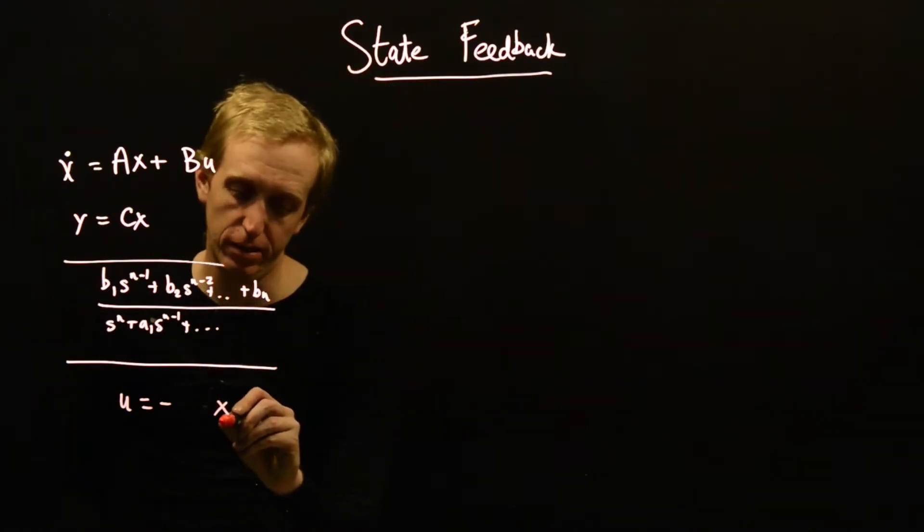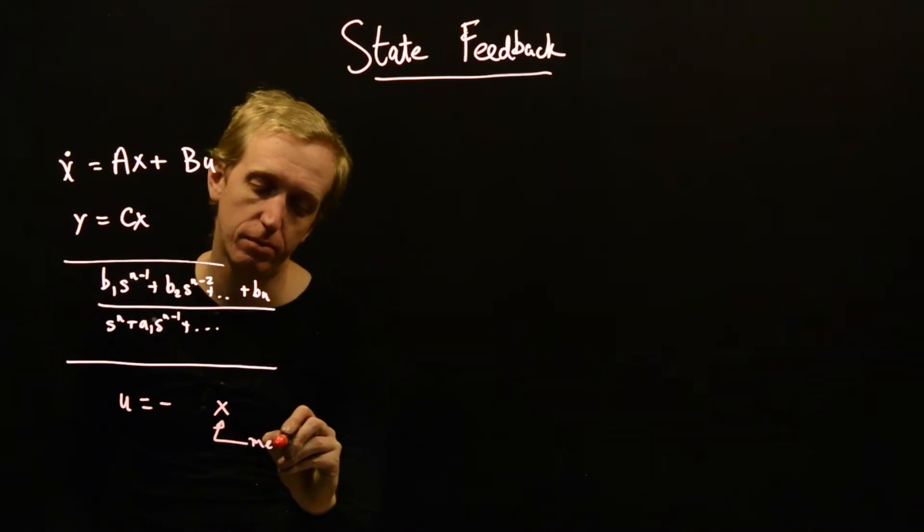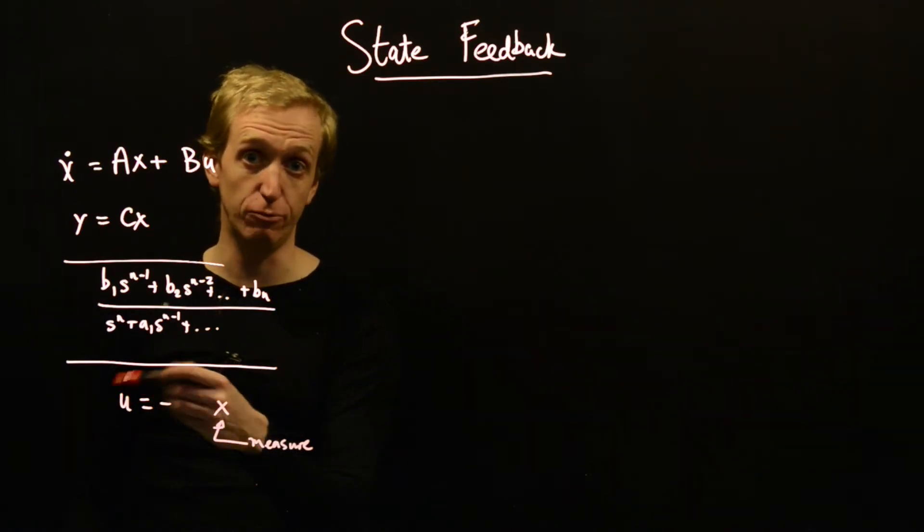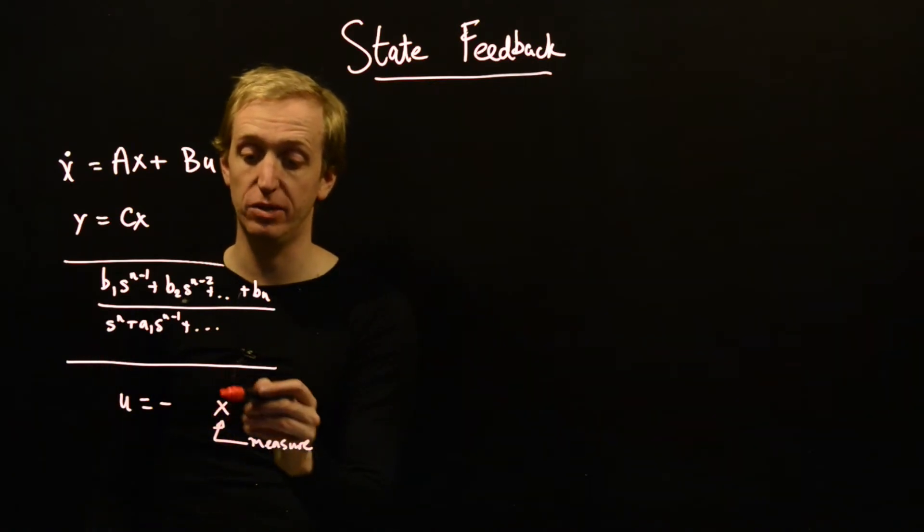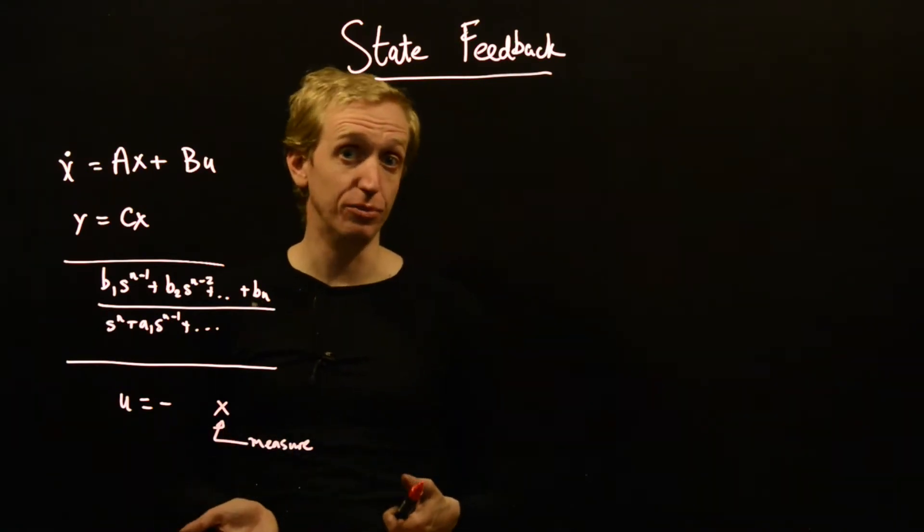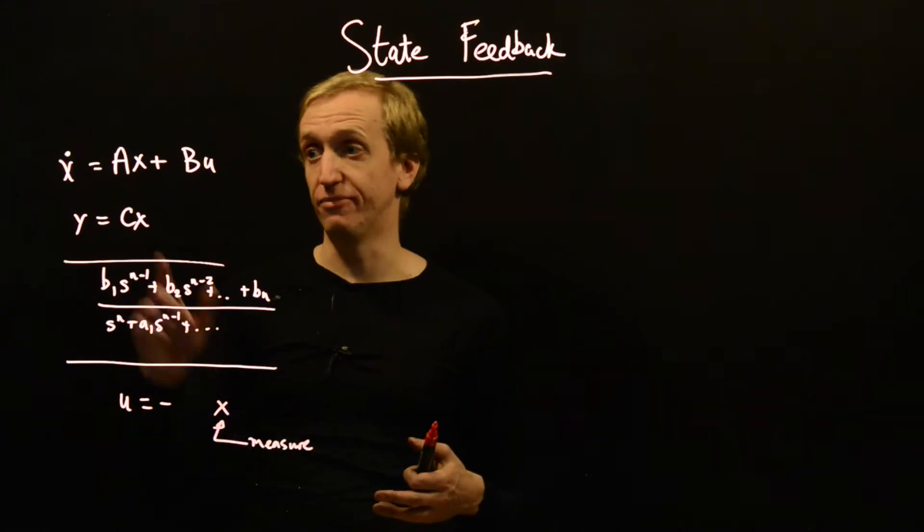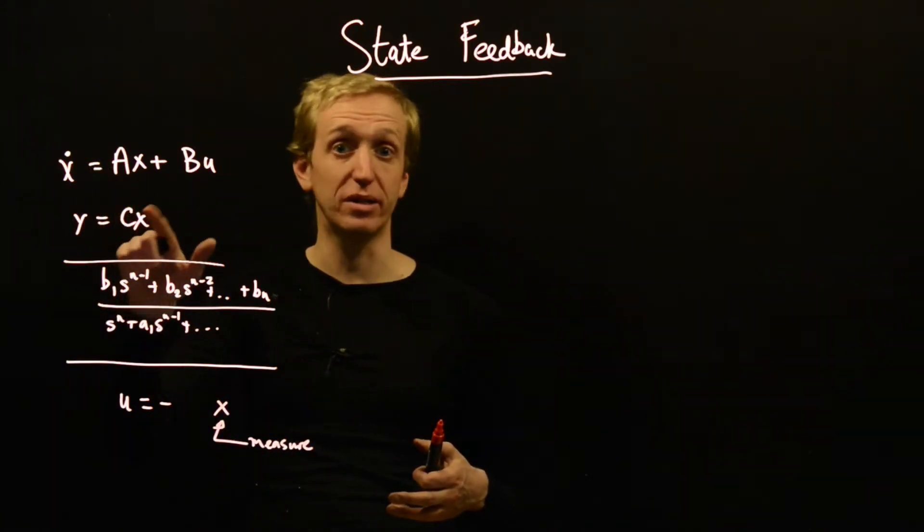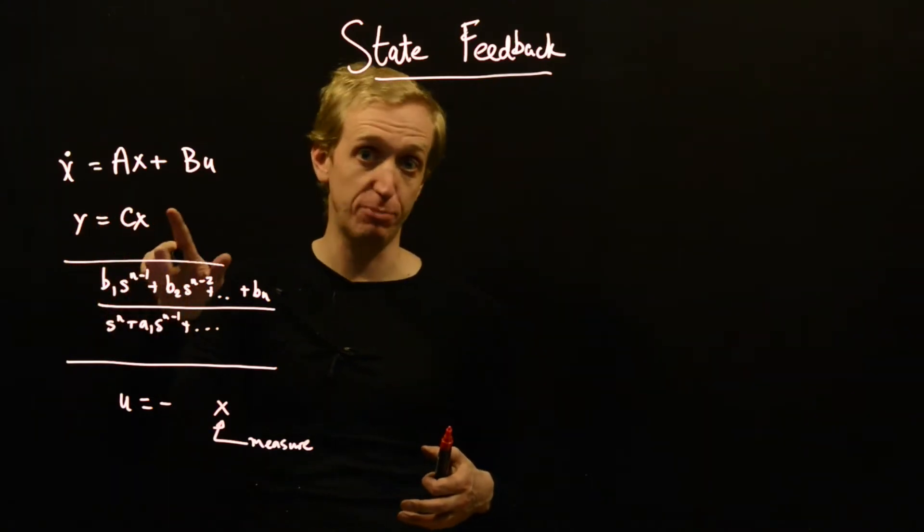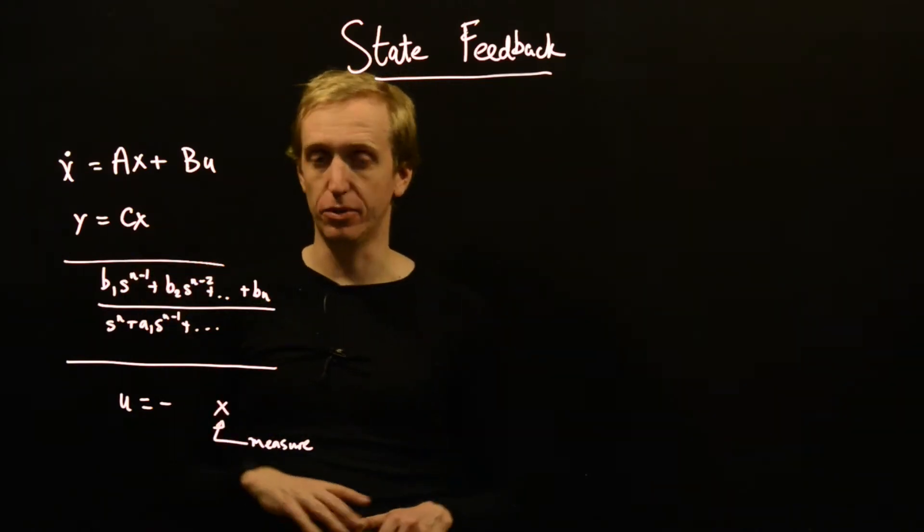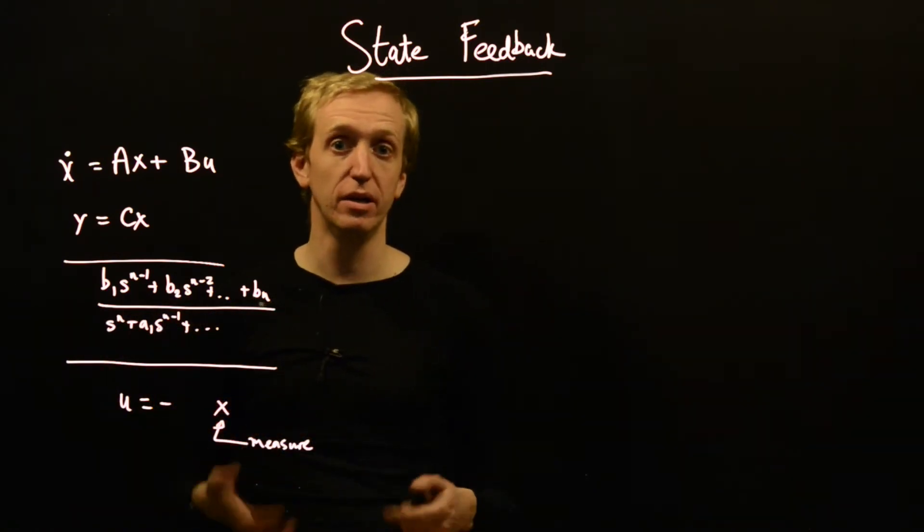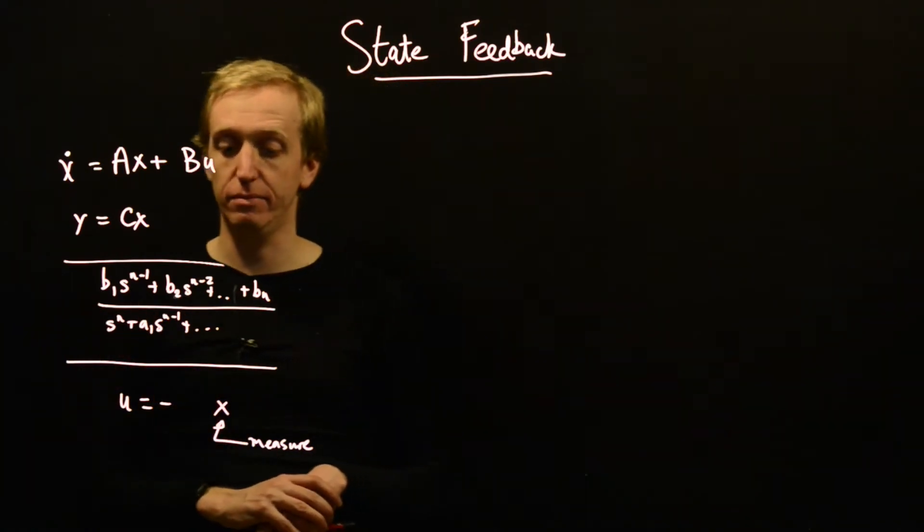As I'm sure you remember, we do it by setting u is equal to minus something multiplied by the state. If we were to implement this in practice, that would imply that we would measure the state x and decide what our control input u is in response to that measurement. The way we decide is governed by the matrix that we put here. This is why state feedback on its own can't really often be used. It's very rare that this C matrix is the identity matrix, so it's very rare that the thing that you measure, your output, corresponds to the state of your system.